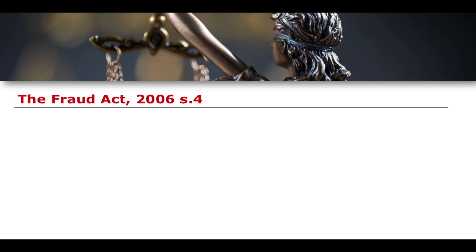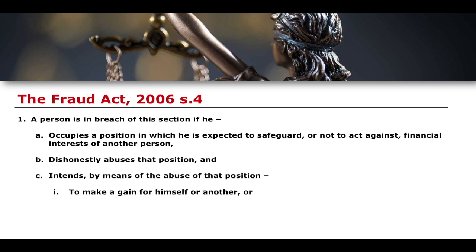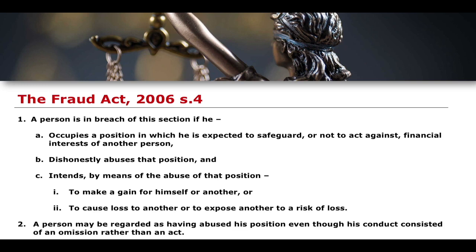Section 4 of the 2006 Fraud Act states: a person is in breach of this section if he occupies a position in which he is expected to safeguard or not to act against the financial interests of another person, dishonestly abuses that position, and intends by means of the abuse of that position to make a gain for himself or another, to cause loss to another, or to expose another to a risk of loss. Subsection 2 clarifies that a person may be regarded as having abused their position even if their conduct consisted of an omission rather than an act.